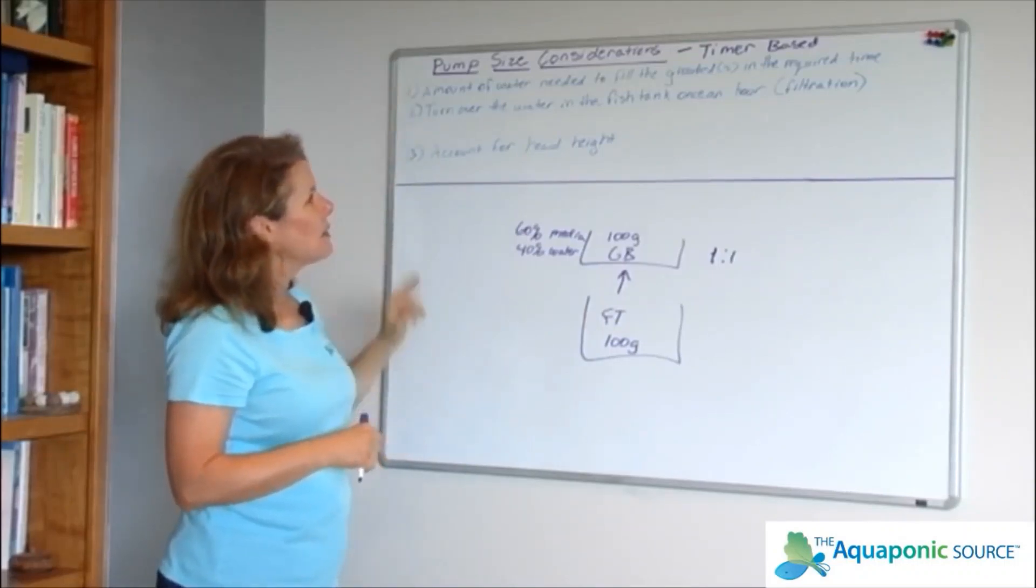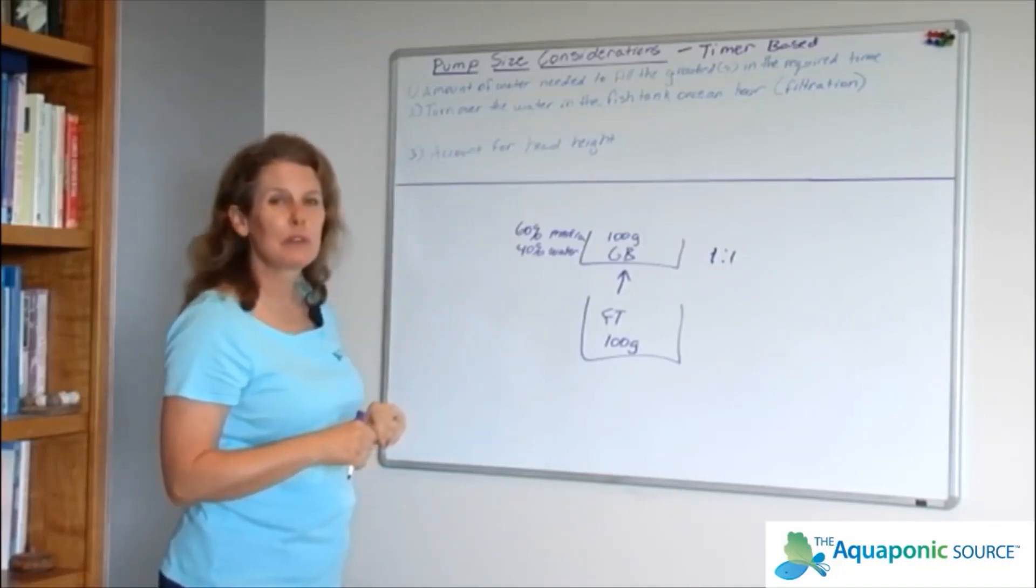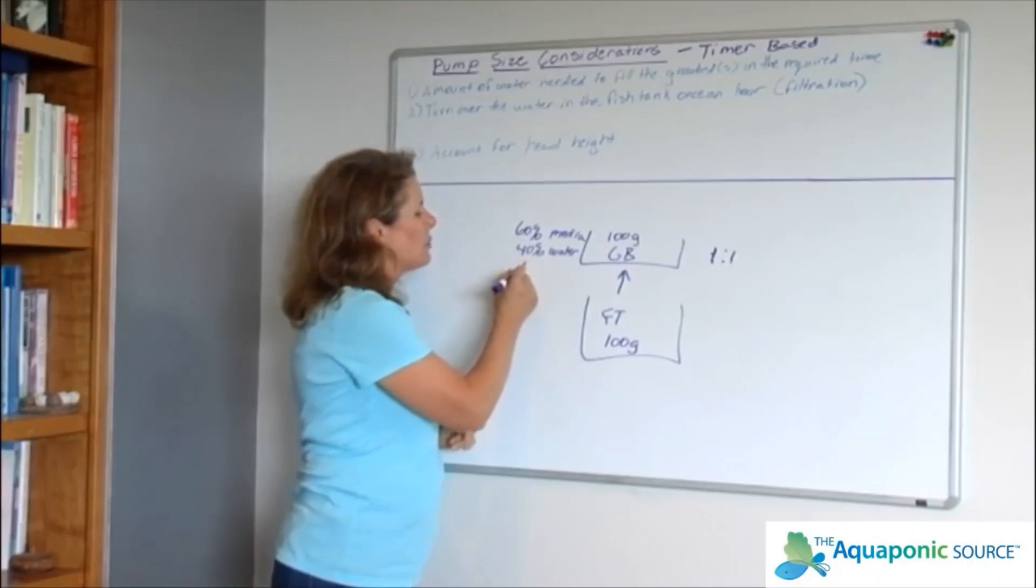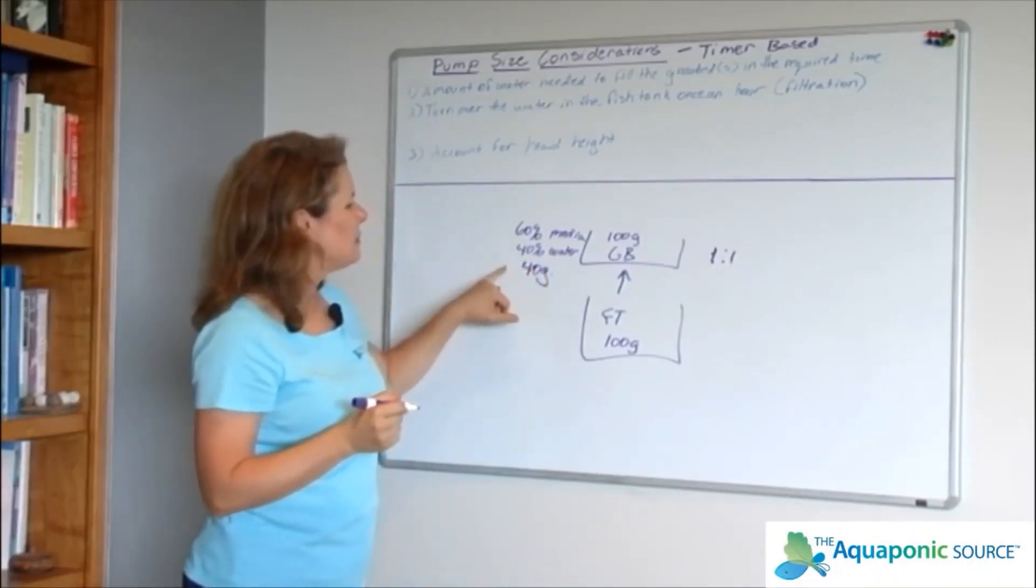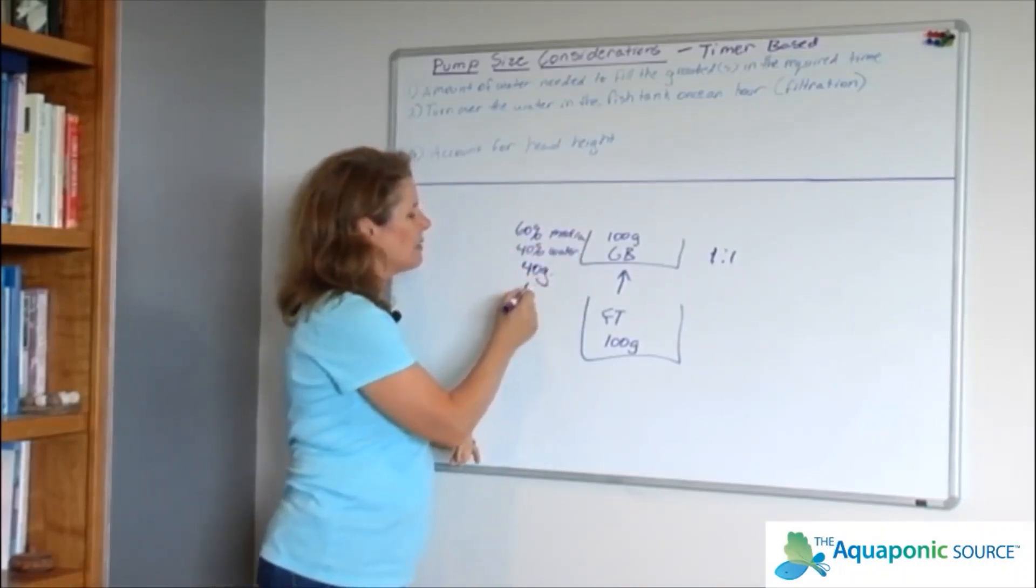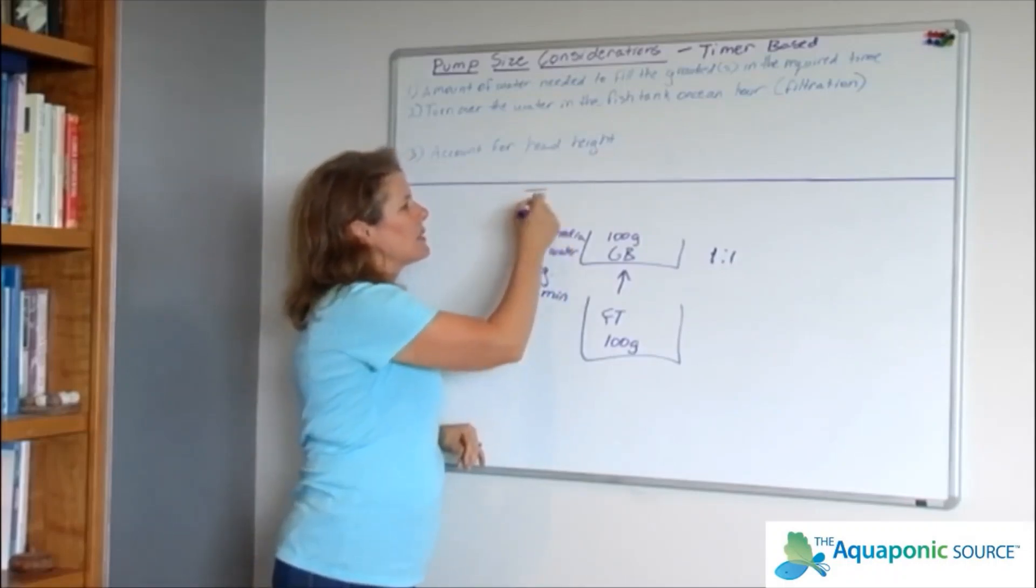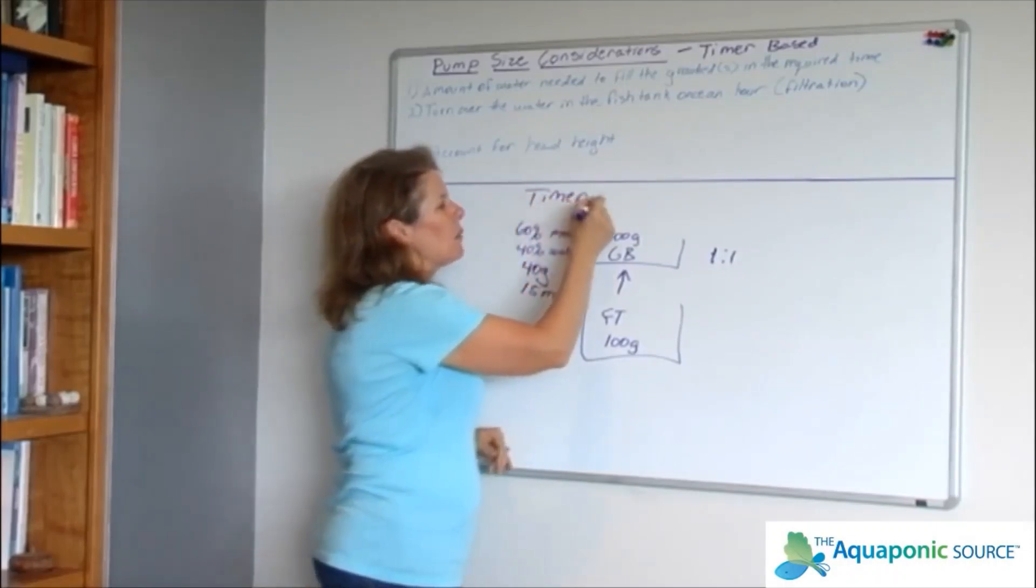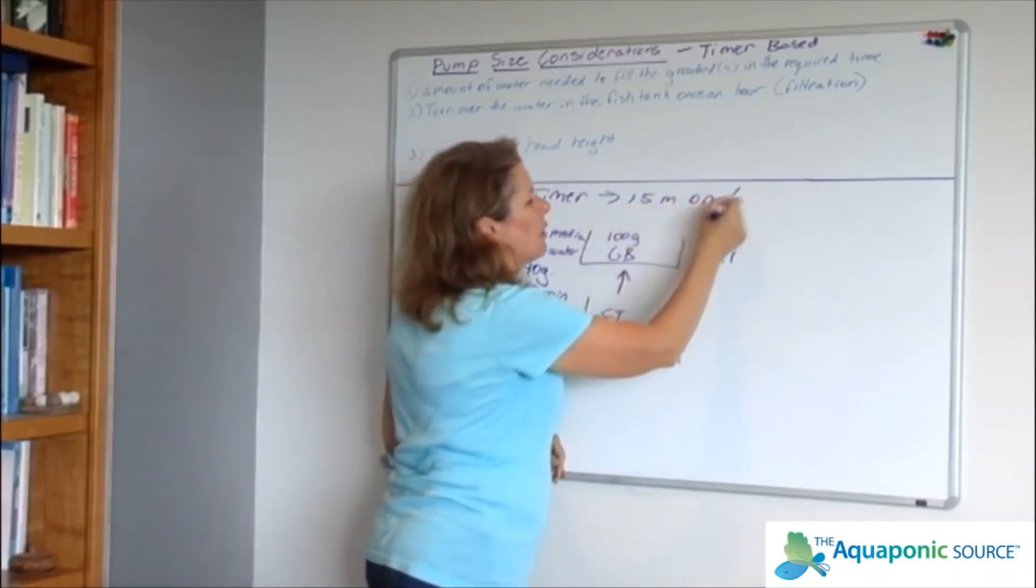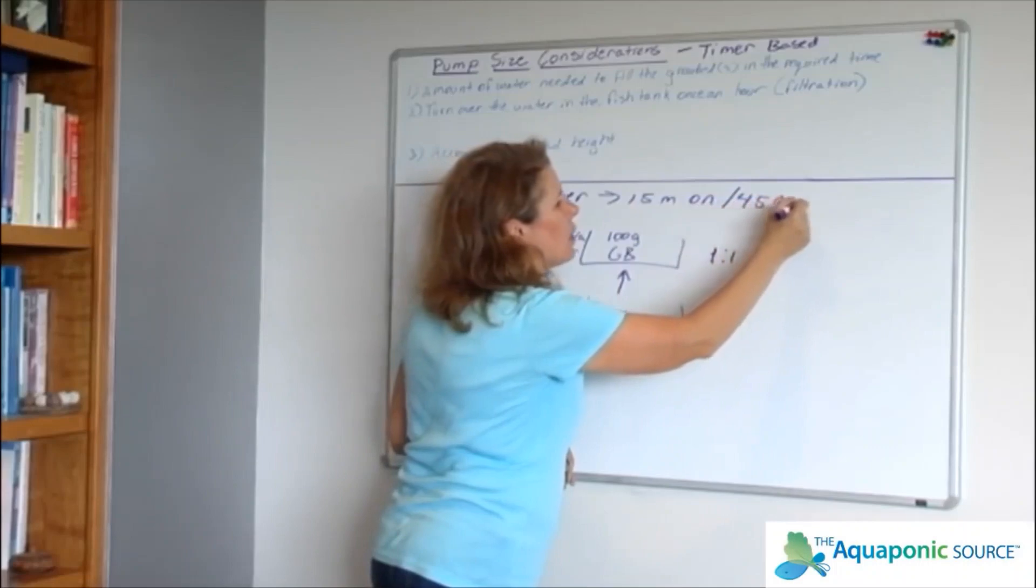Let's look at our considerations. Number one: the amount of water we need to fill the grow bed in the required amount of time. Well, with this 40%, I need 40 gallons, so I need a pump that can run 40 gallons of water in 15 minutes. Remember that with the timers we run 15 minutes on, 45 minutes off. So I need to push 40 gallons in 15 minutes, or four times 40 gallons in an hour. That's 160 gallons.